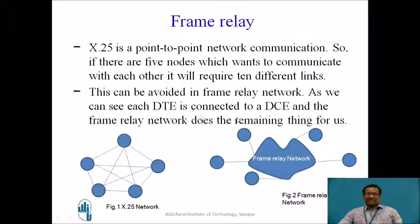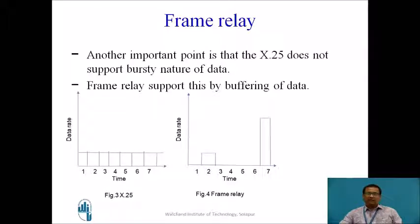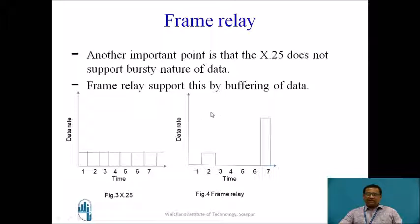Each DTE is connected and the Frame Relay Network does the remaining switching for us. Figure 3 and Figure 4 show what type of data a particular network supports. For example, this type of data is supported by X.25 and this type of data is supported by Frame Relay.